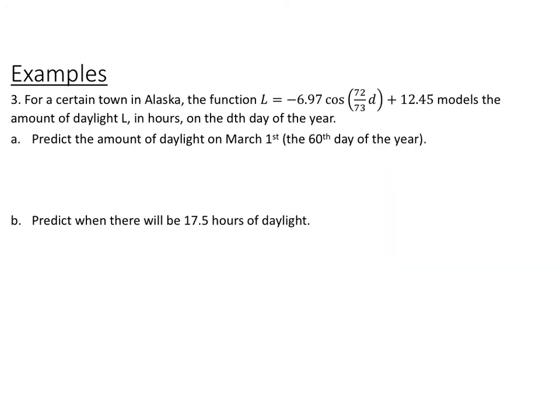So last, modeling with sinusoidal functions. For a certain town in Alaska, the function L equals negative 6.97 cosine of 72 over 73d plus 12.45 models the amount of daylight L in hours on the dth day of the year. So for part a, we want to predict the amount of daylight on March 1st, which, assuming it's not leap year, is the 60th day of the year. And we also want to predict when there will be 17.5 hours of daylight, which day. So go ahead and pause the video and try this one.